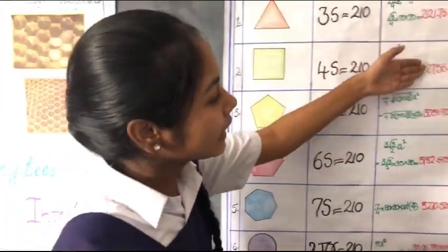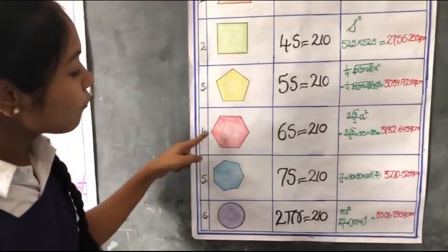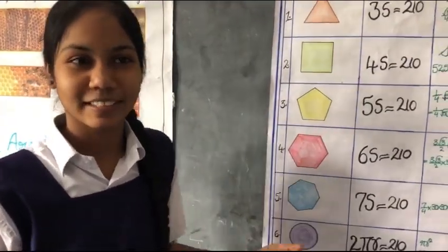why are honeycombs hexagonal? Why not septagon? Why not circle? There is another reason. My friend Radhika will tell about it.